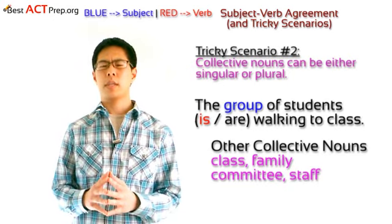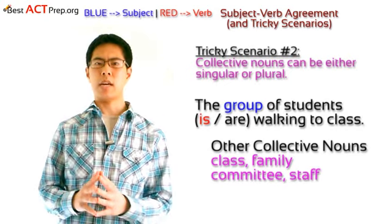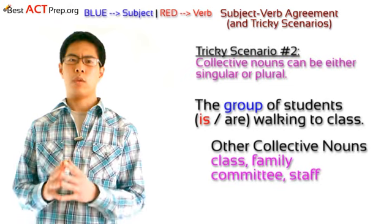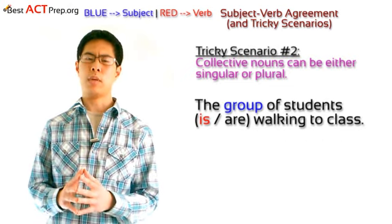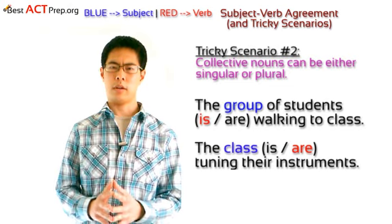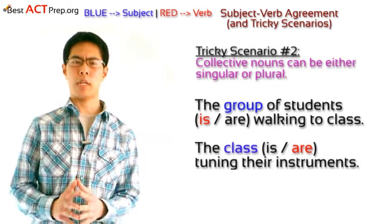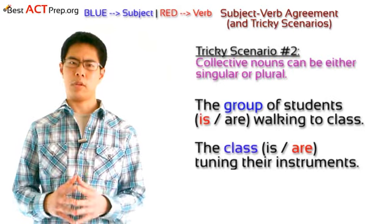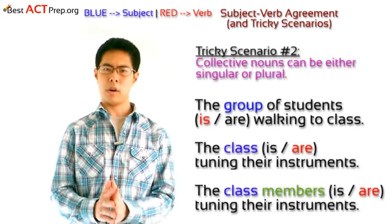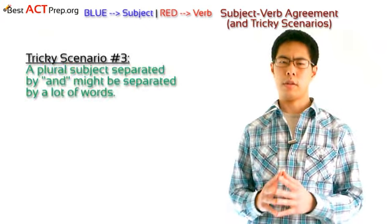Unfortunately, it gets even more tricky because sometimes these collective nouns can actually be plural if they're referring to individuals within the group, such as in the following sentence: 'The class is or are tuning their instruments.' But here's the trick: if you can add the word 'members' after the subject, the verb is going to be plural. So for example: 'The class members is or are tuning their instruments.'